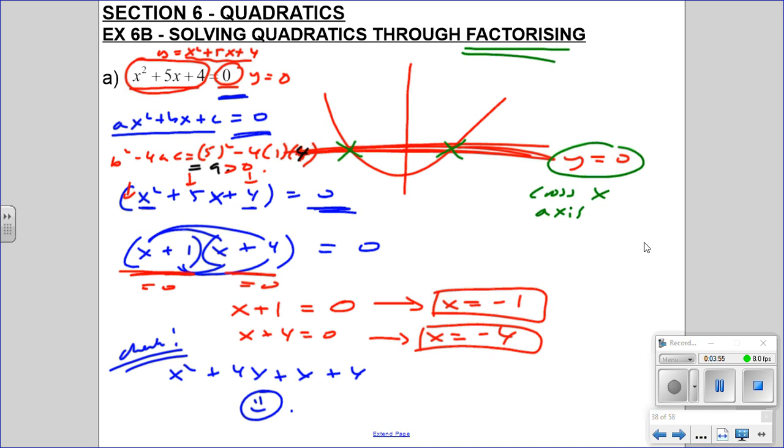And we do. So we know that actually my graph was wrong. It should cross at minus 4 and minus 1, so it's going to look something like that.